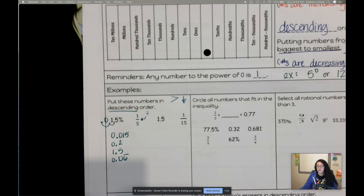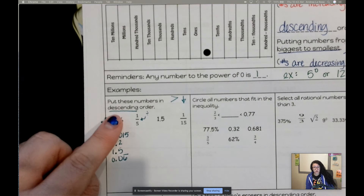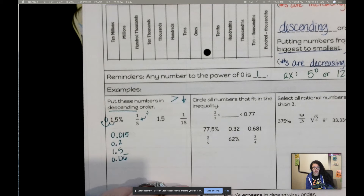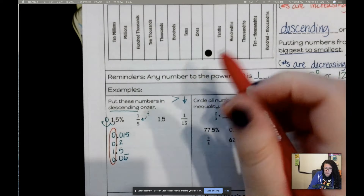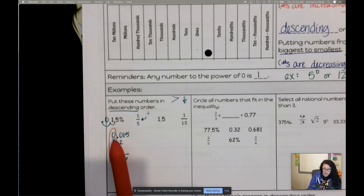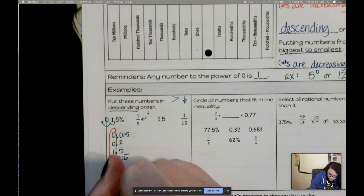Now that all numbers are converted to decimals, we need to compare them by place value. The more digits to the left of the decimal, the bigger the number. In descending order we want big numbers first. Looking at the ones place, I have 0, 0, 1, and 0 — so 1.5 is the biggest number and goes first.